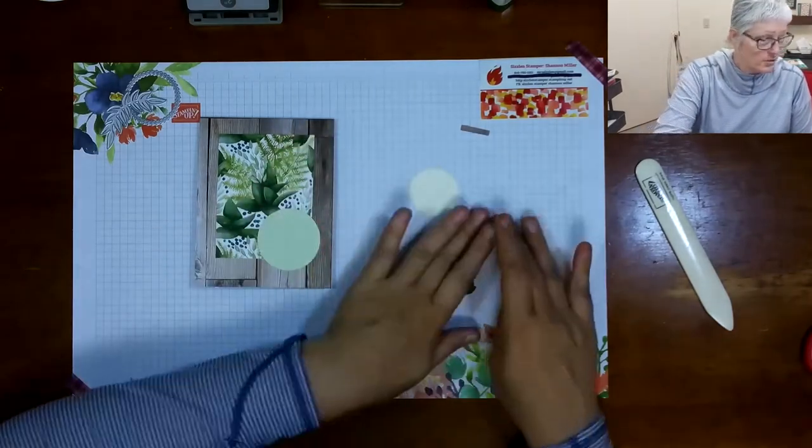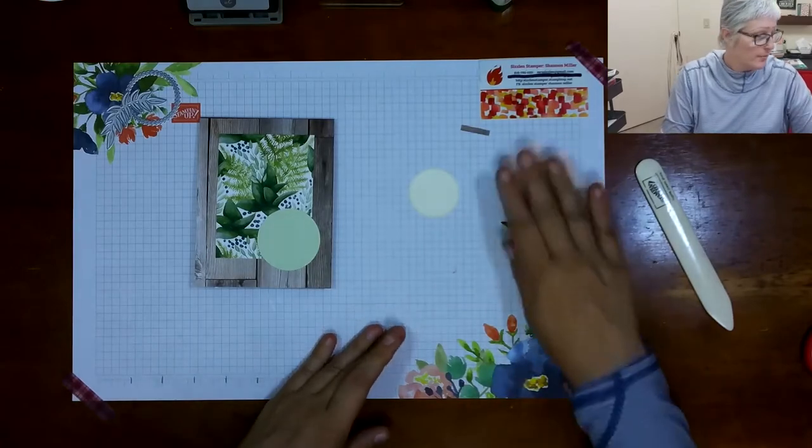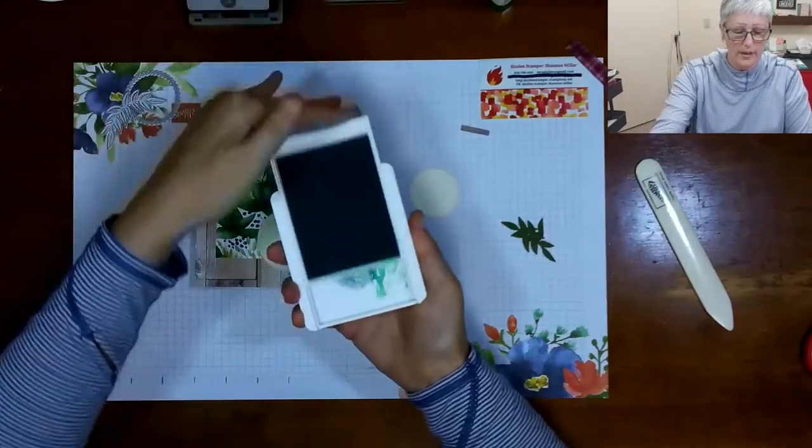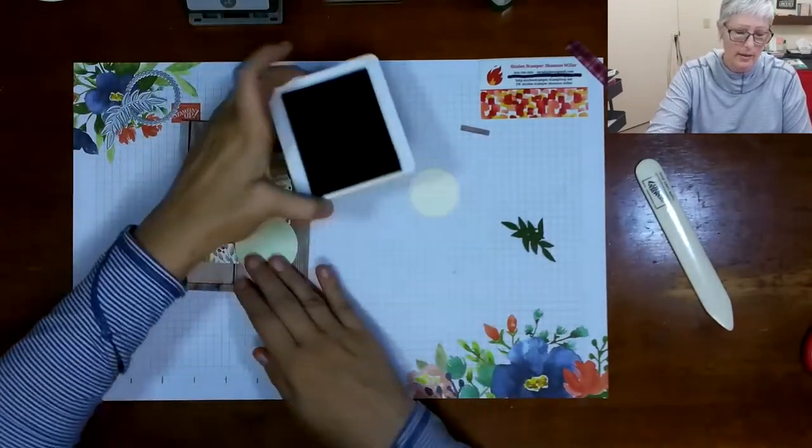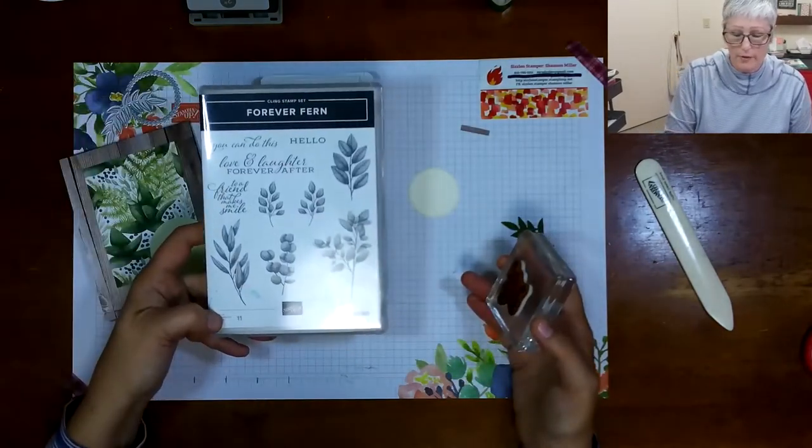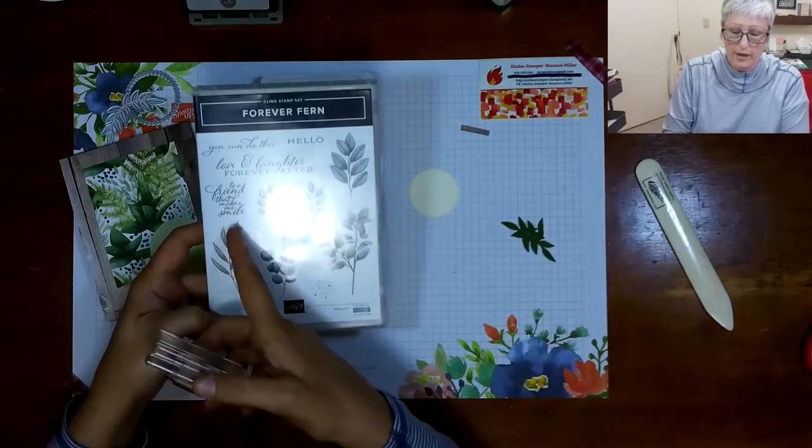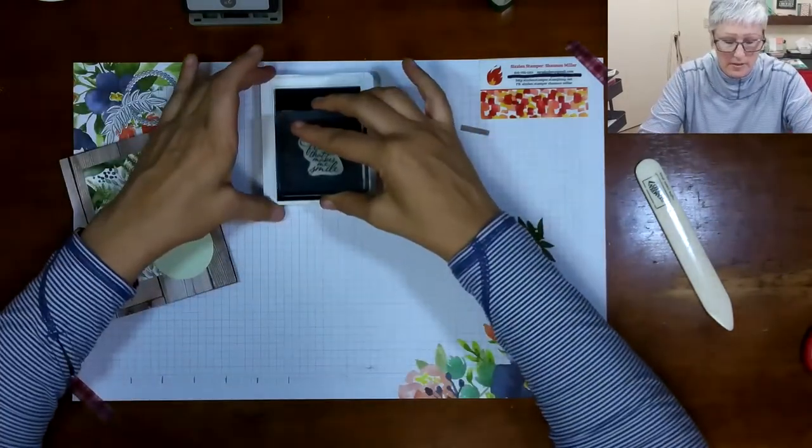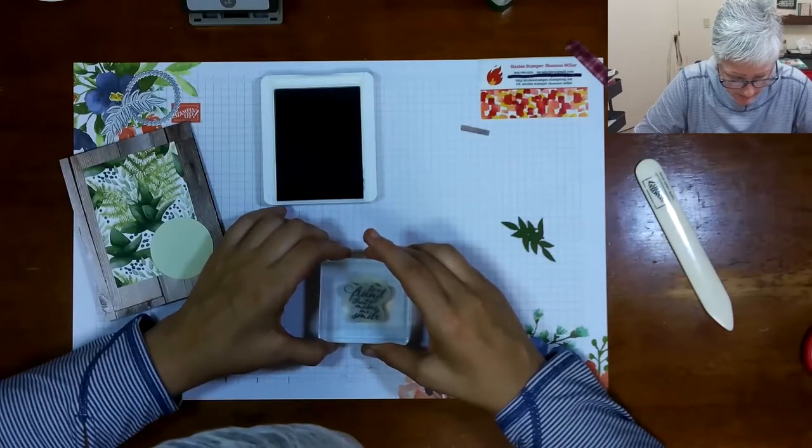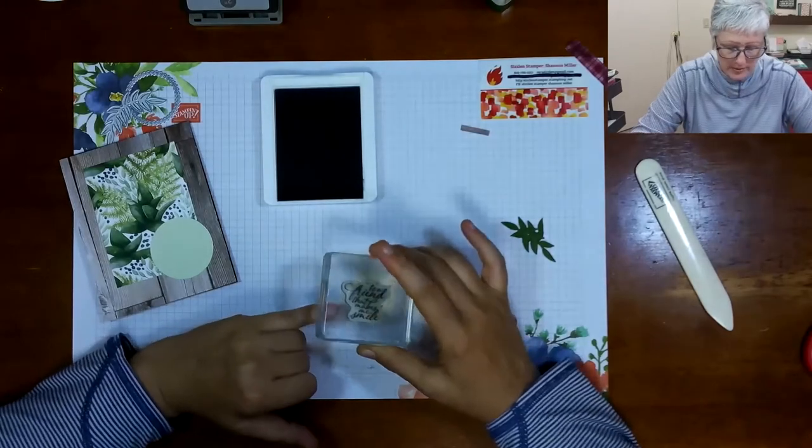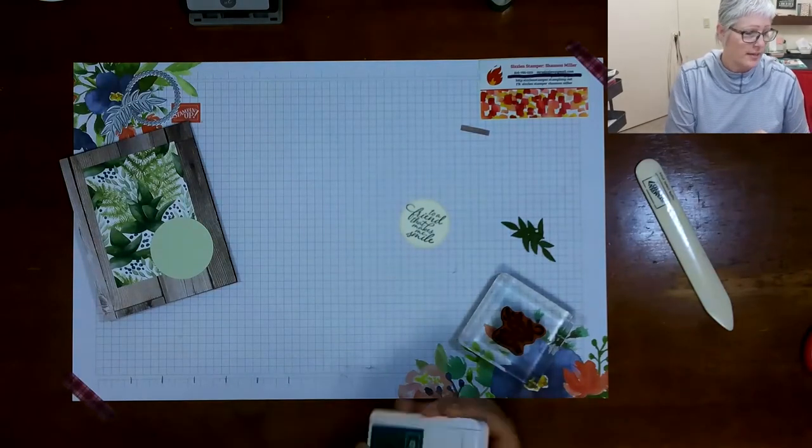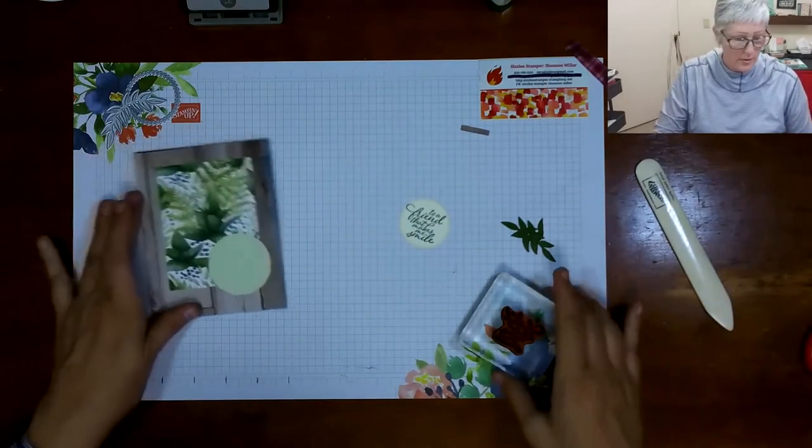So what I'm going to do at this point is we're going to go ahead and do the little bit of stamping. I'm going to use the Shaded Spruce ink. The saying out of this set that I'm using from the Forever Fern set is 'to a friend that makes me smile.' So I'm just going to ink that up. This is one that is just barely going to fit on there. I like to fill my little layer circles.